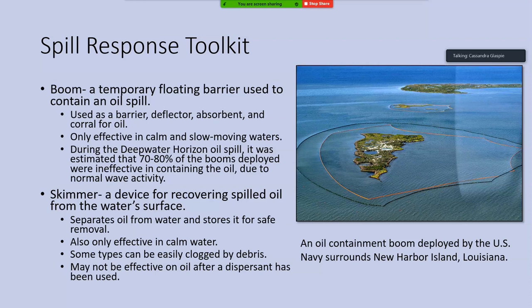A skimmer can be used along with booms to clean up oil. It's a device for recovering spilled oil from the water surface — it separates oil from water and stores it for safe removal. These are only effective in calm water and areas where booms can corral oil into one area so it can be easily skimmed off the surface. Some types of skimmers can be easily clogged by debris, and it was found during Deepwater Horizon that skimmers may not be as effective on oil after a dispersant has been used.